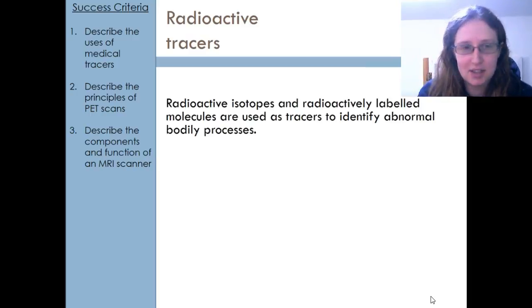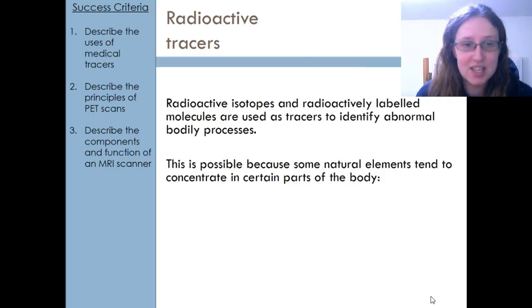We're looking at radioactive tracers and how we can use them to study the body. Basically, we take a radioactive isotope or a radioactively labelled molecule and we stick it in the human body to see where it goes and see if there's anything that's wrong. Basically, we just take advantage of the natural elements tending to congregate in certain parts of the body.